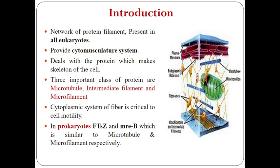Cytoskeleton is basically a network of protein filaments present in all eukaryotes. It provides a cytomuscular system — meaning inside the cell it is acting as a musculature system, similar to how the musculature system in our body acts as a skeleton. There are three important classes of cytoskeleton proteins: microtubule, intermediate filament, and microfilament. The cytoplasmic system of fibers is critical to cell motility.